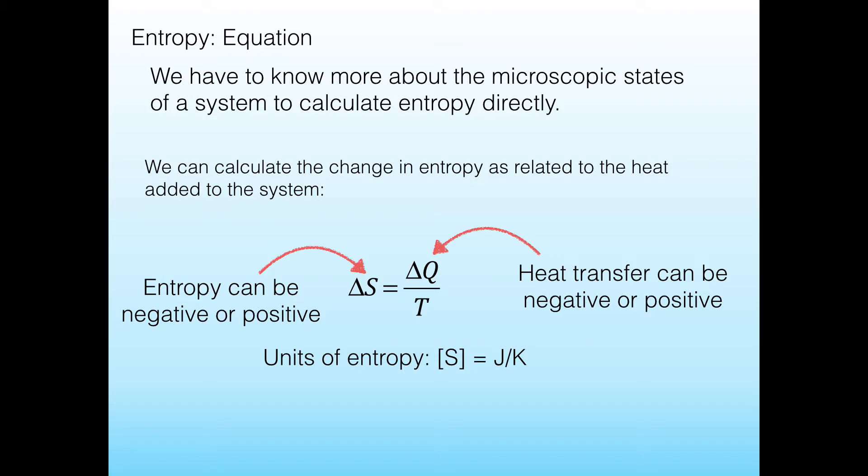Now that seems counterintuitive because we just said that the second law says that change in S always has to be greater than zero or equal to zero. So how is it possible to have a negative entropy change?